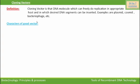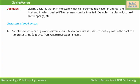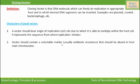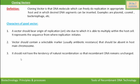What are the characters of a good vector? A vector should have an origin of replication site (ORI site), due to which it is able to multiply within the host cell — it represents the sequence from where replication initiates. A vector should also contain a selectable marker, usually an antibiotic-resistant marker, that should be absent in the host's main chromosome. It should not have the tendency for natural recombination, so that recombinant DNA remains unchanged.